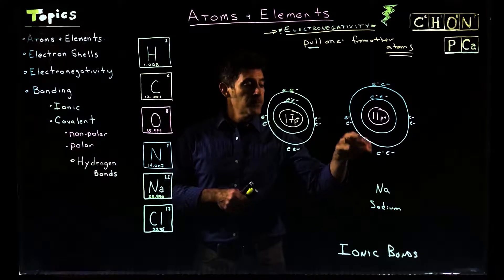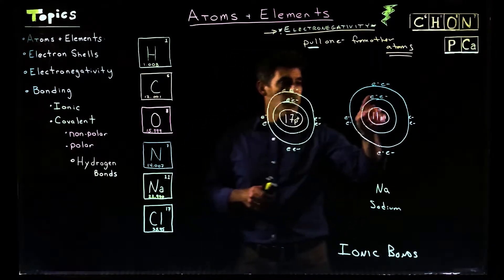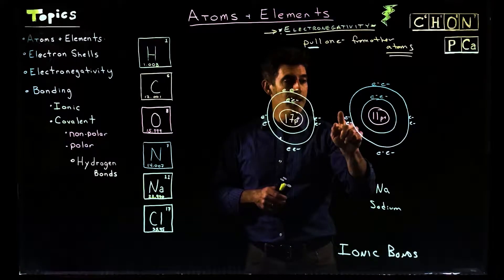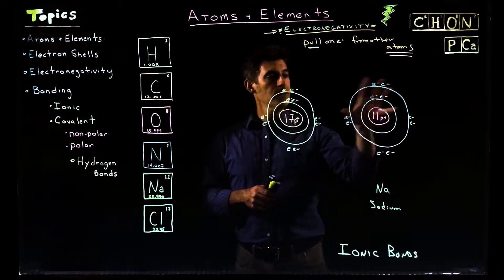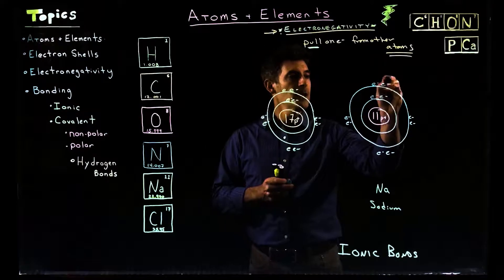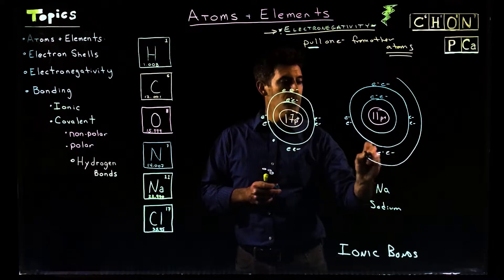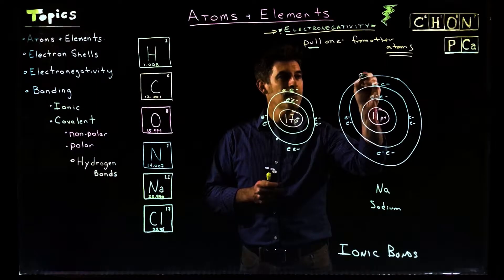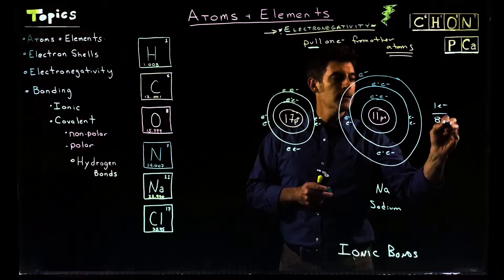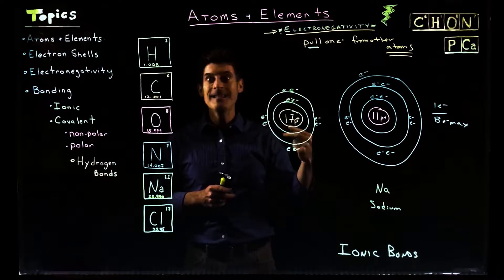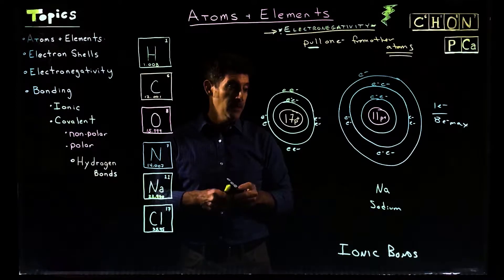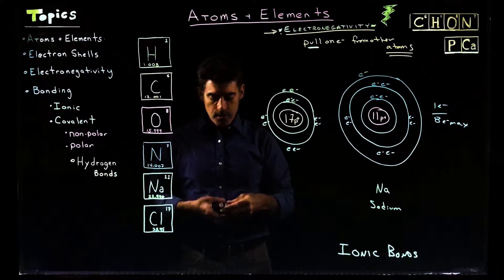So sodium has 11 protons. So we put 2 in the first, 3, 4, 5, 6, 7, 8, 9, 10. That fills up a second shell, right? Now there's 8. 11. There's one more electron. So we actually have to go now out into the third shell. Go a little further out. But out in that third shell, there's 1 electron. 1 electron out of 8 electrons max. So it needs 7 more. It needs 7 to fill that shell. That's kind of a lot to ask for.